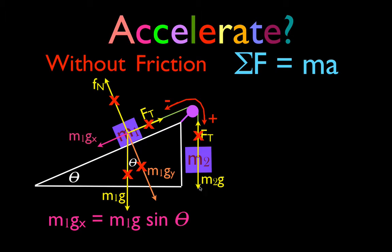And that leaves us only two forces: M1GX and M2G. So we have M1GX pointing in the negative direction and M2G pointing in the positive direction. It's kind of like a tug of war between M1GX and M2G. Whichever of those two is greater, the object will move in that direction. If M1GX is greater, these two objects will accelerate in the negative direction.